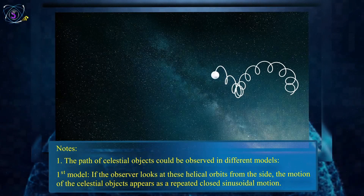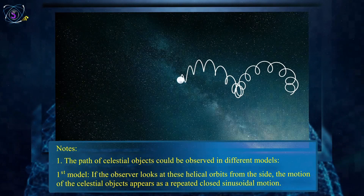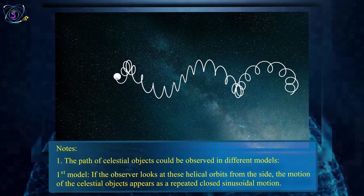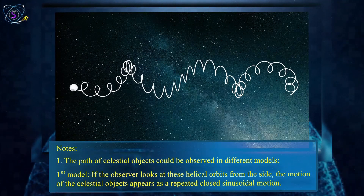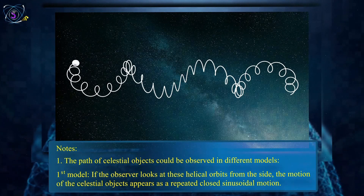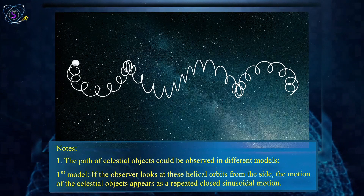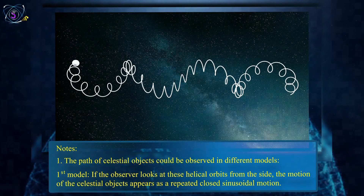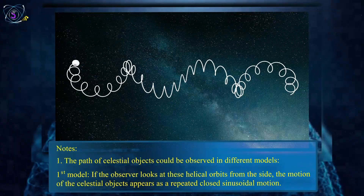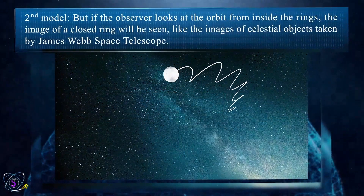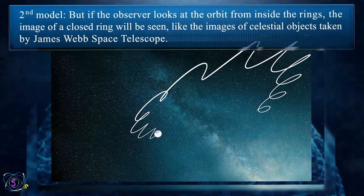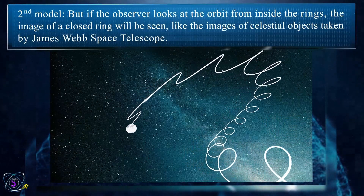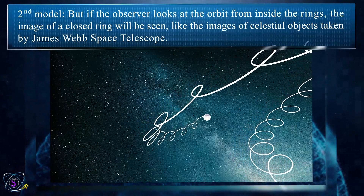Note 1: The paths of celestial objects could be observed in different models. First model: if the observer looks at these helical orbits from the side, the motion of the celestial objects appears as a repeated closed sinusoidal motion. Second model: if the observer looks at the orbit from inside the rings, the image of a closed ring will be seen — like the images of celestial objects taken by the James Webb Space Telescope.